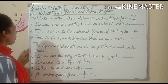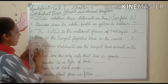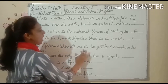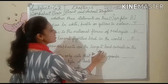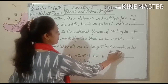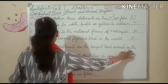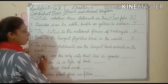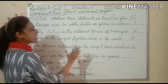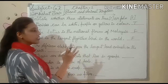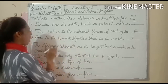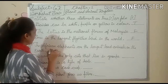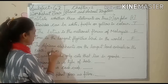Next, number 4: The African elephants are the largest land animals on the earth. So you write here: true.